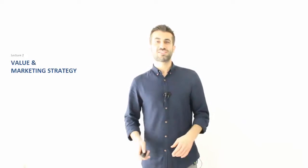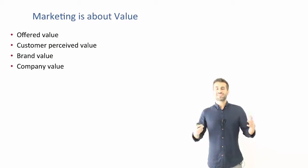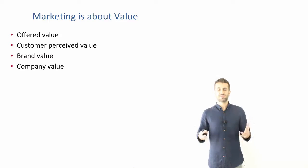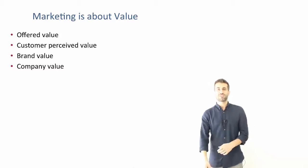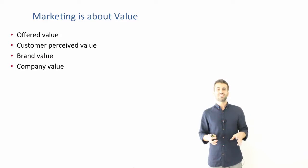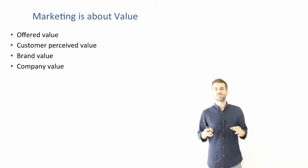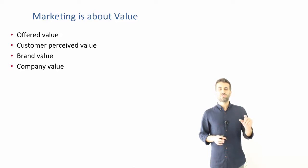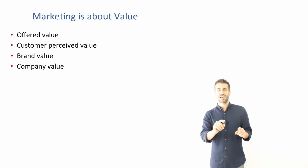In this lecture I will talk more about value and marketing strategy. Marketing is about value, but value has different connotations. There are different concepts that we use for value. One of them is the offered value — the value offered by the company, by the product, by the brand. However, it's not necessarily the value perceived by the consumer. One of the first tasks of marketing theory is actually to match the perceived value with the offered value.